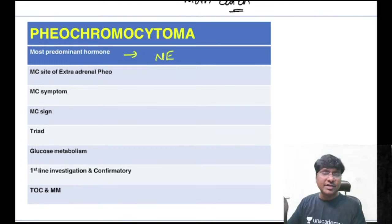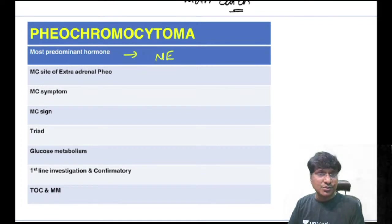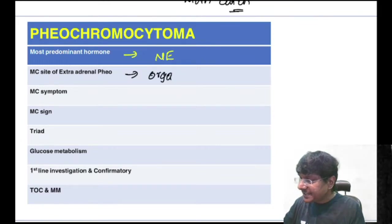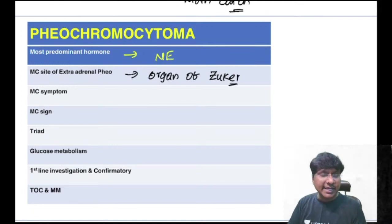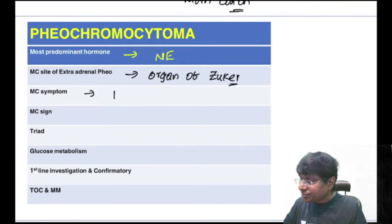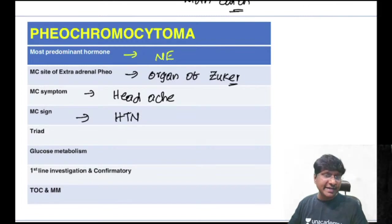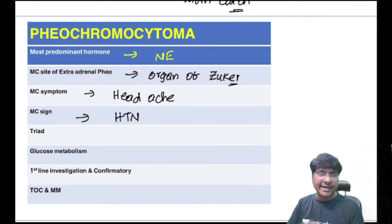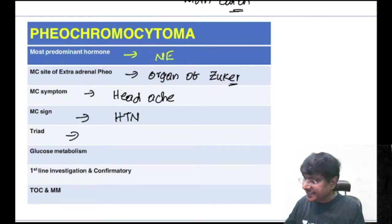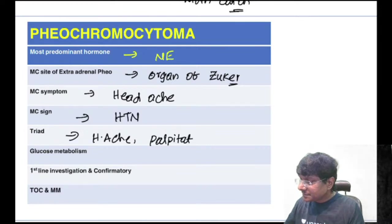Most common site of extra-adrenal pheochromocytoma is the abdominal aortic area — organ of Zuckerkandl. Most common symptom is headache due to hypertension. The classic triad of pheochromocytoma is headache, palpitations, and profuse sweating. There is also hyperglycemia.